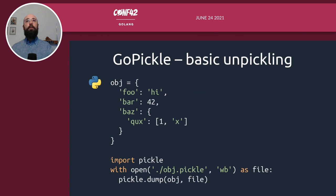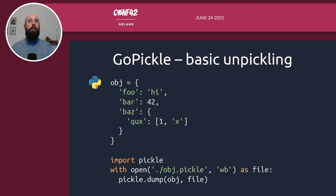Let's jump right in with a basic usage example. It all starts with some Python code. Let's start by defining an object using simple built-in data types — the same dict we saw previously, containing a bunch of keys and values of different data types: some strings and numbers. We already know how to serialize data with the Pickle module. Once this code is executed, we'll get an object.pickle file containing our pickle program.